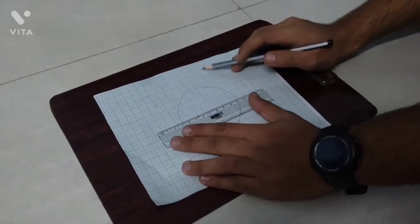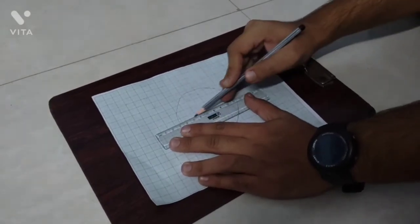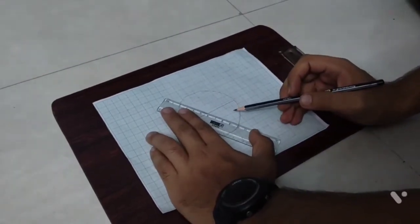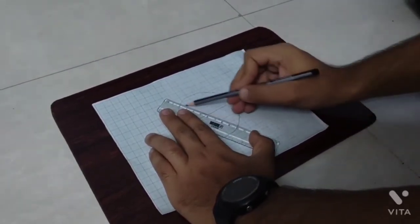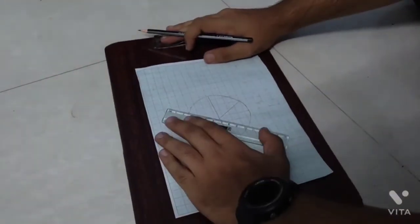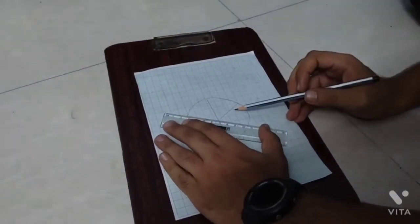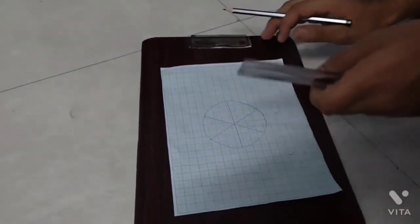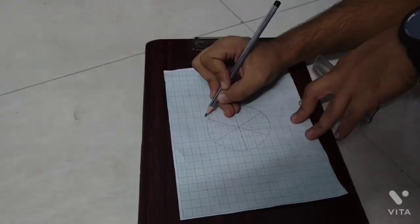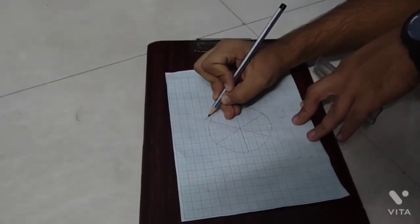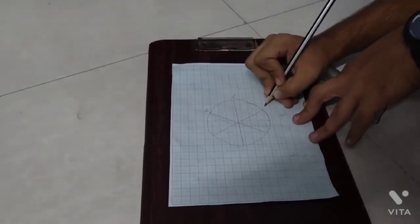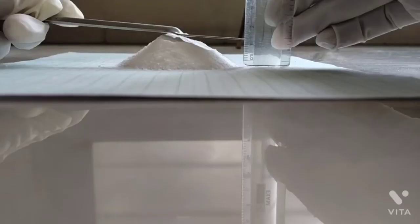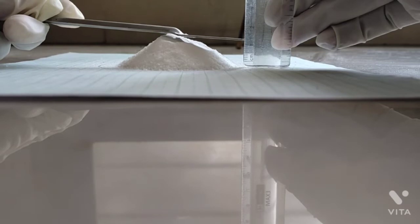After that draw 3 diameters of that circle and mark them as D1, D2 and D3. Then measure the height of the cone which is formed by the powder.